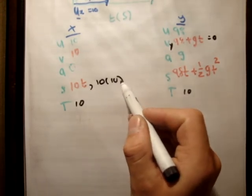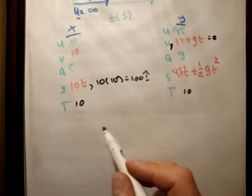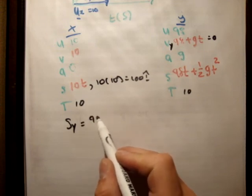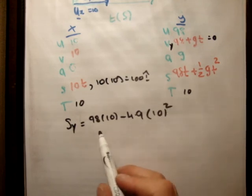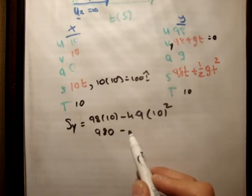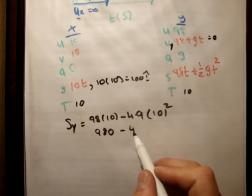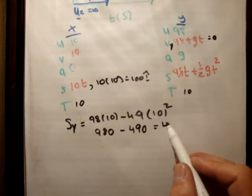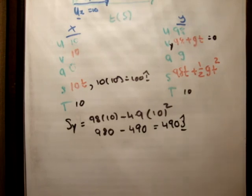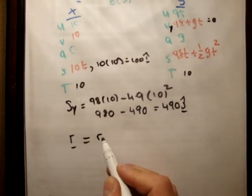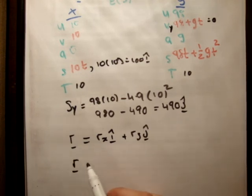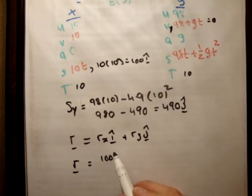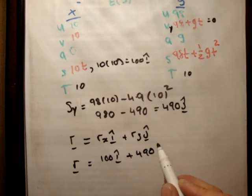And similarly, s sub y becomes 98 times 10 minus 4.9 times 10 squared. So that's 980 minus 490. So that's equal to 490 j hat. So is that correct? Yes. So therefore, the position vector r is equal to r sub x i hat plus r sub y j hat. And that's equal to 100 i hat plus 490 j hat.